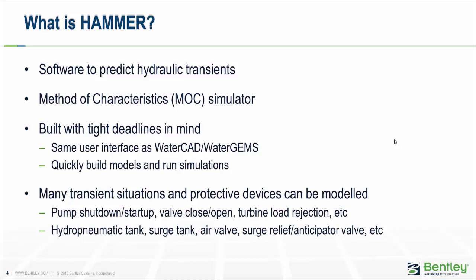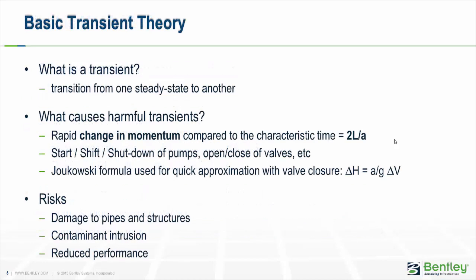Some basic transient theory: what is a transient? A transient is when you're transitioning from one steady state to another. For example, if you start with a pump on and that pump shuts off, if you run that in WaterGEMS with an extended period simulation, you'll just see the pump is on and then the next time step the pump is off — those are two steady state conditions. But in reality, during the transition between those steady states, there are fluctuations that can sometimes be harmful.